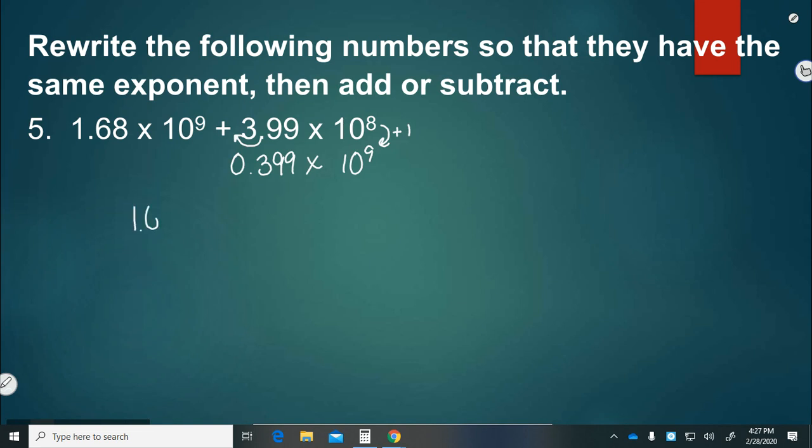Now I can add 0 and 9 make 9, 8 and 9 make 17, 6 and 1 is 7 plus 3 is 10, and 1 and 1 is 2. So my final answer is 2.079 times 10 to the 9th.